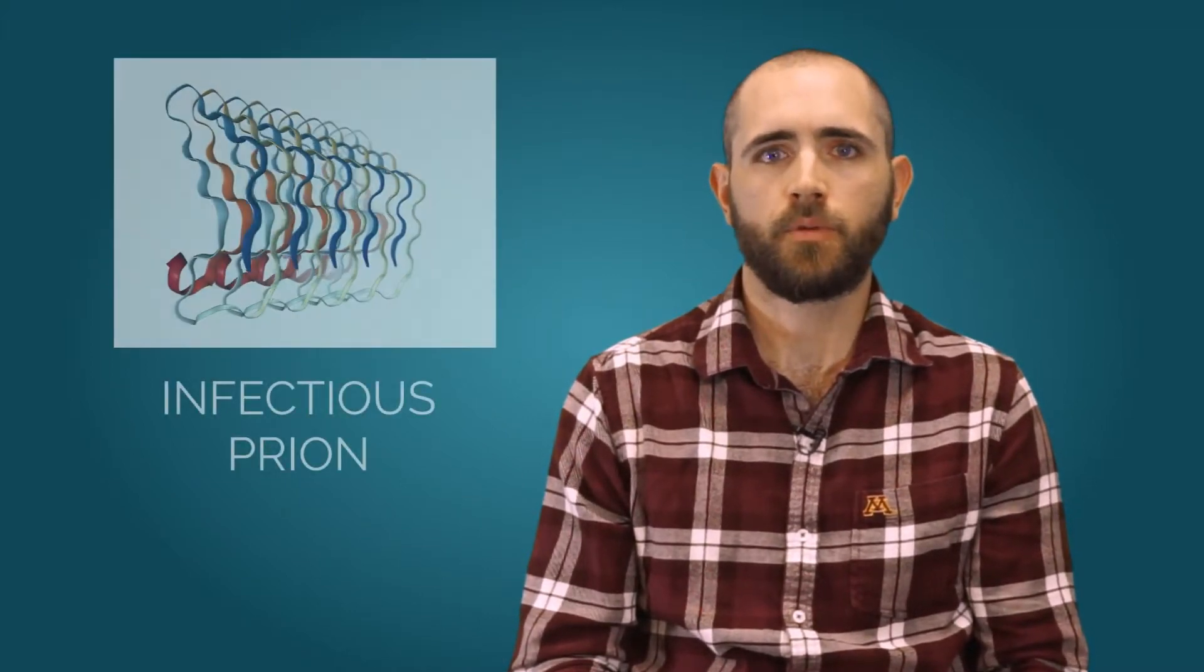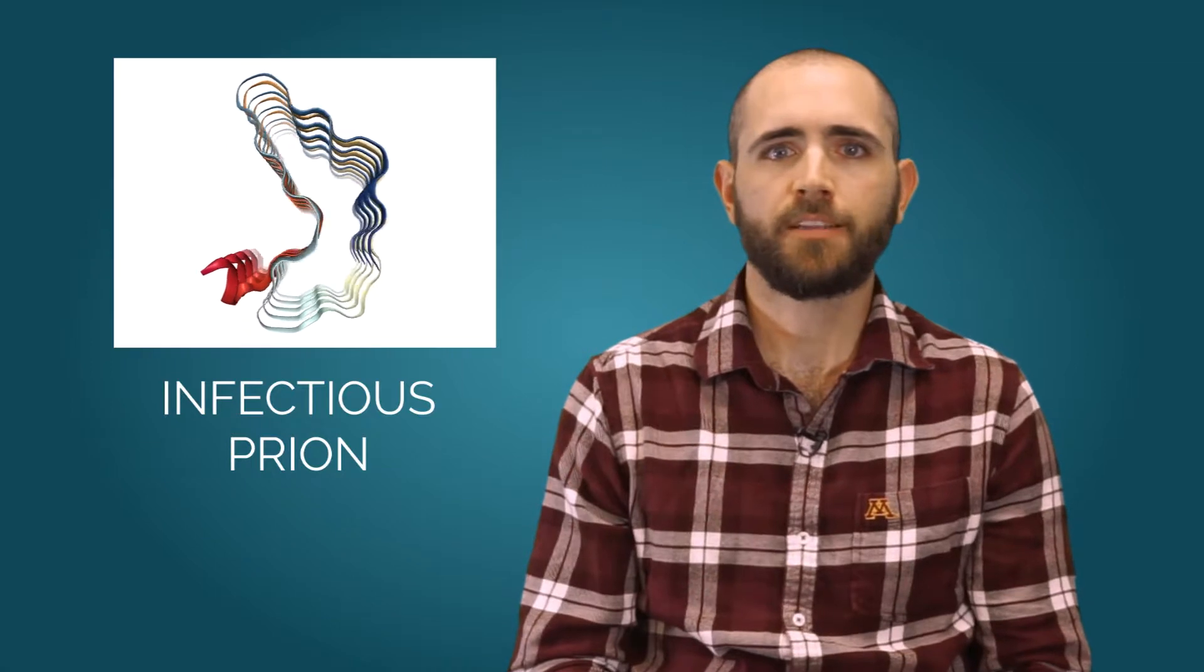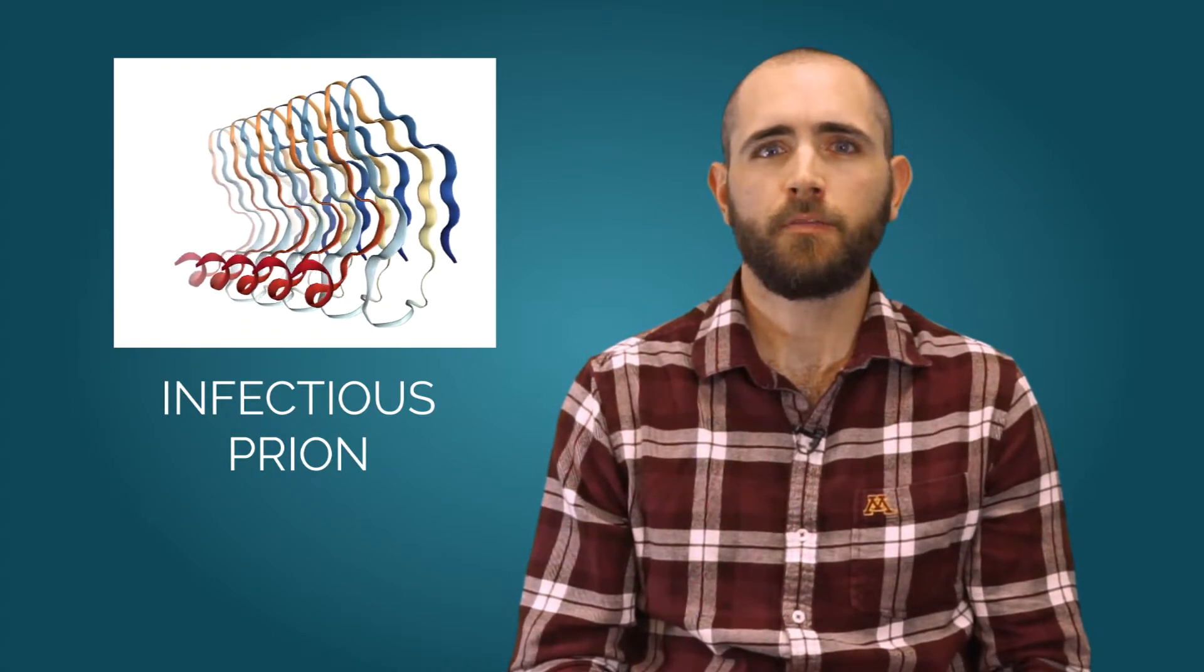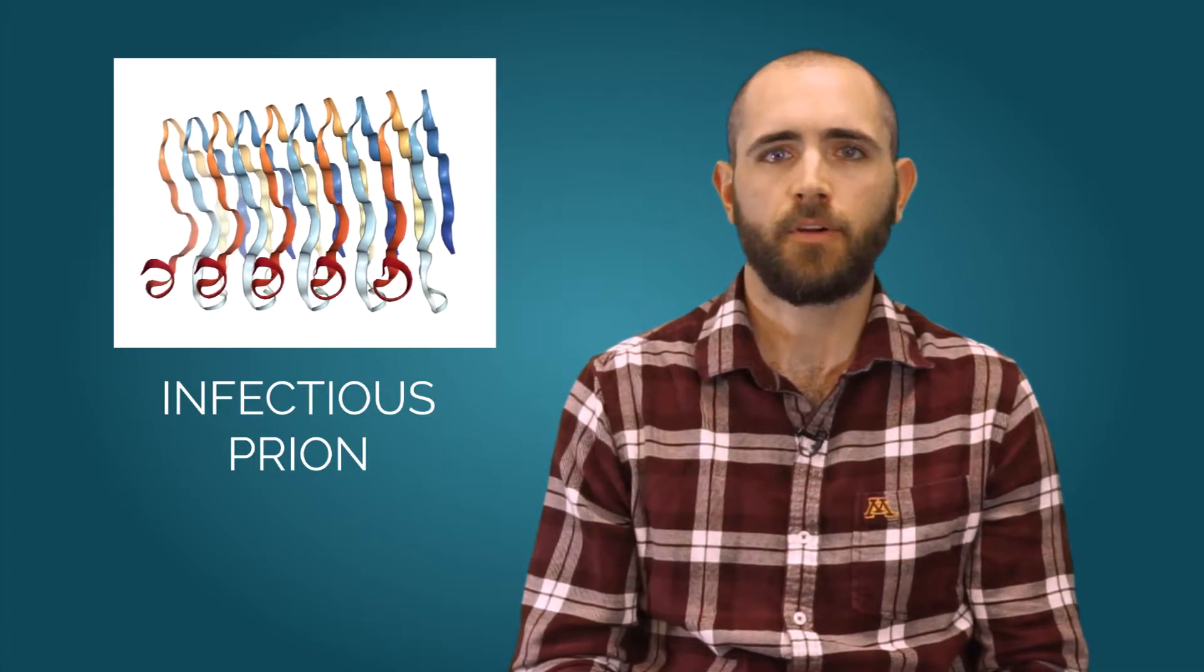Prions are abnormal versions of a protein that we normally find within the body. When the body is infected with a prion, its presence causes normal proteins to misfold into an incorrect formation and become an infectious prion. As the number of prions in the body multiply, the prion formation cascades and the disease progresses.